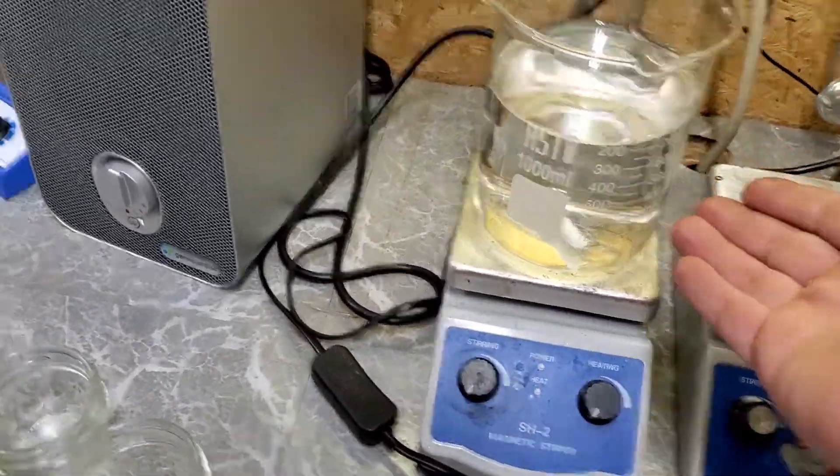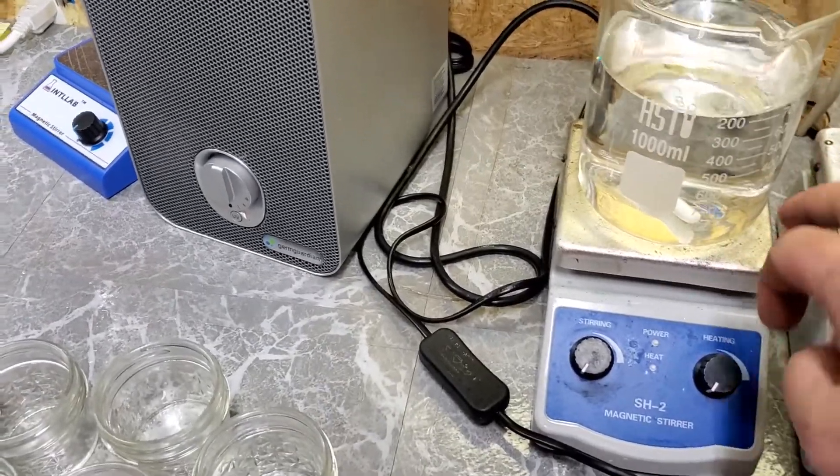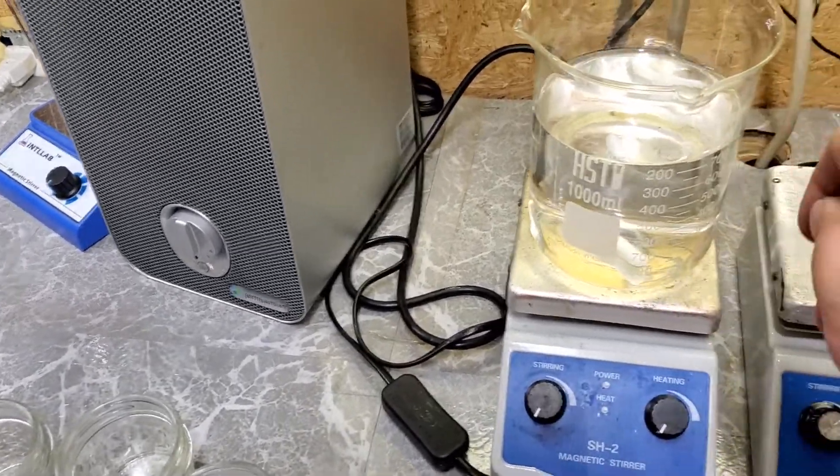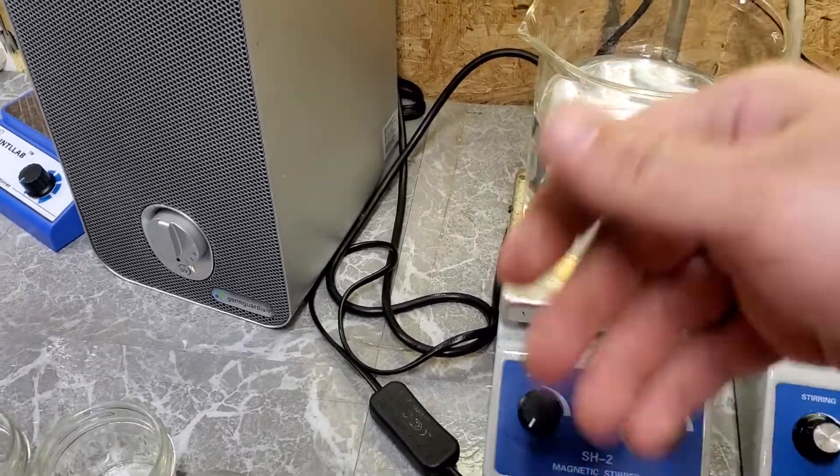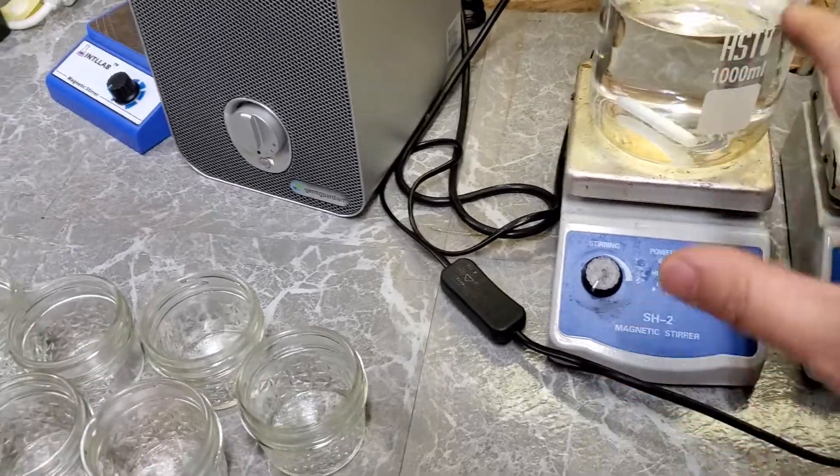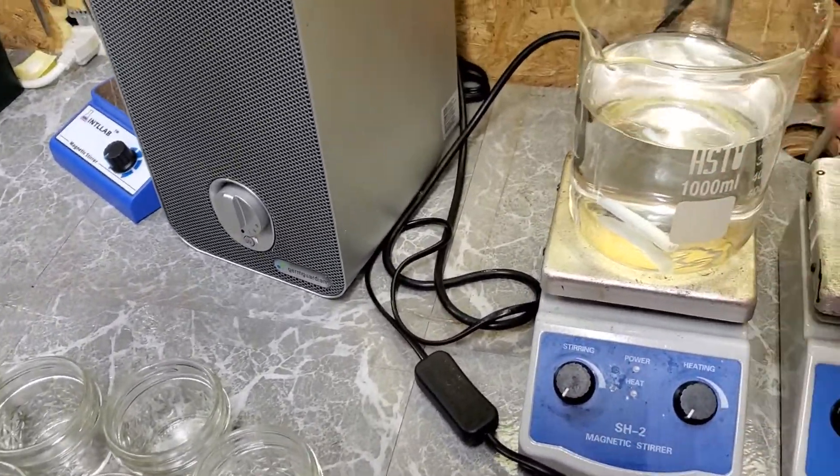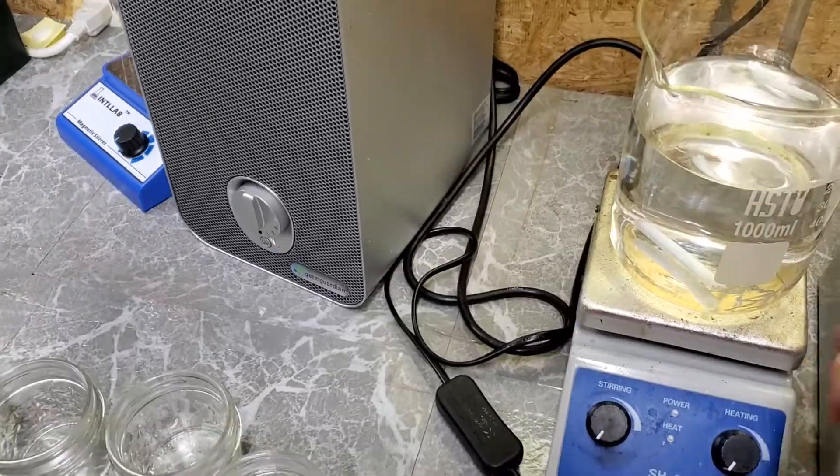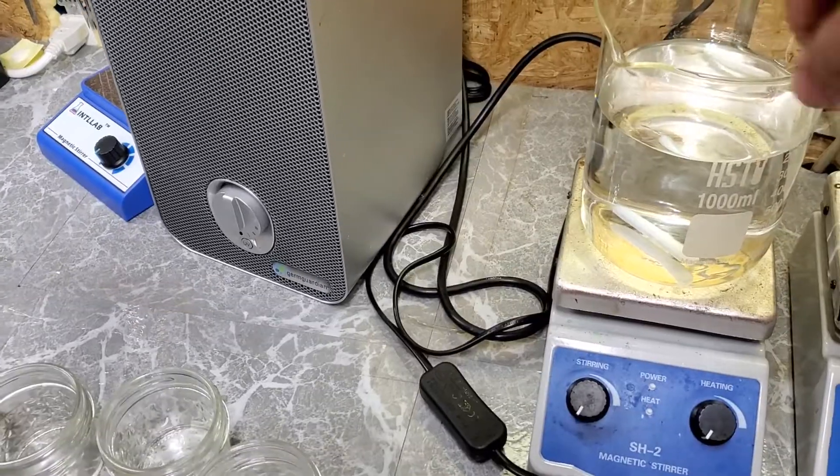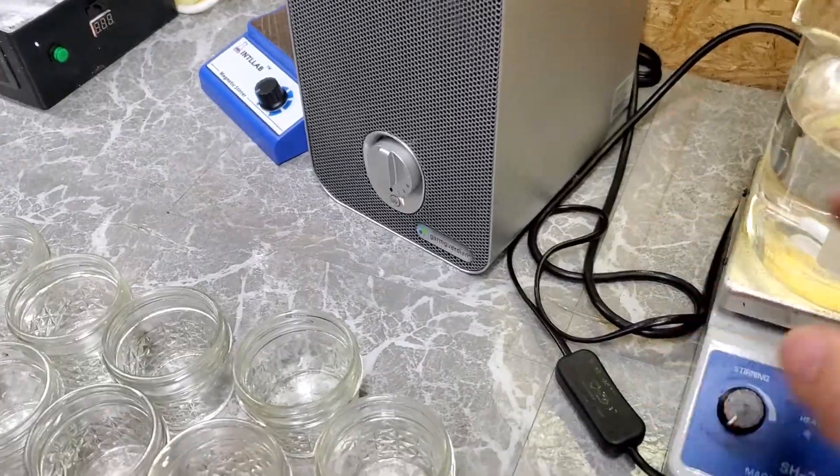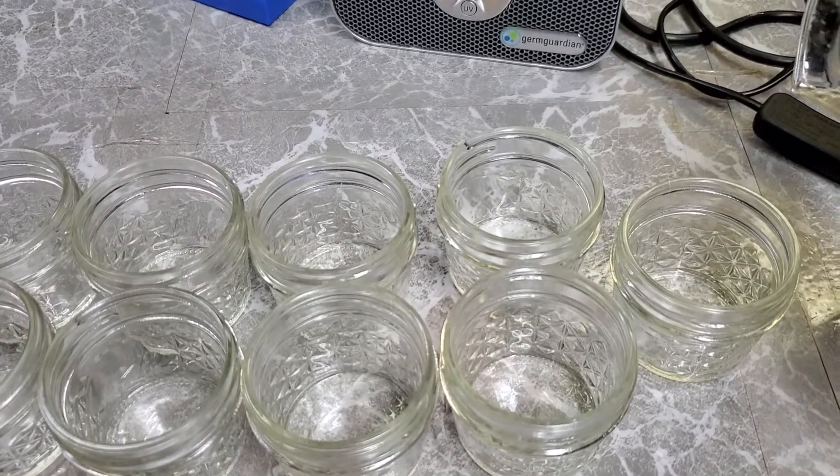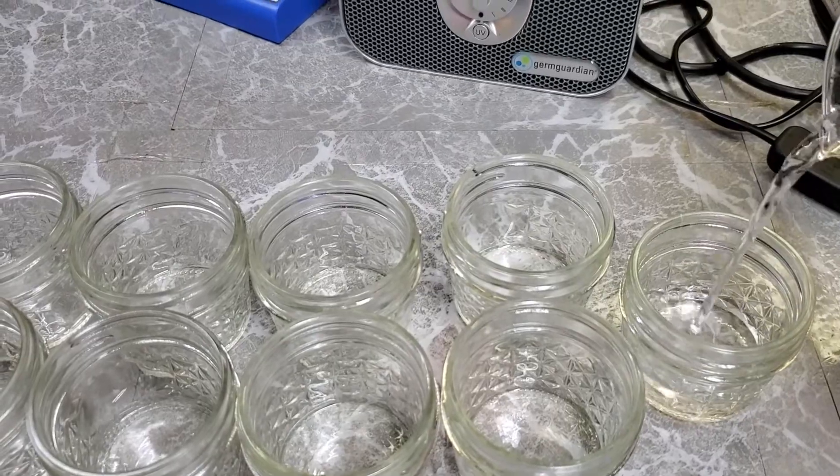Now real quick, you do not need a beaker and a magnetic stir and magnetic stir bars and all this. You can just use a spoon and a Pyrex cup or even a regular drinking cup. You do not need any of this lab equipment. This is just what I have out here, so I'm going to use it to make it a little bit easier on me. But yeah, you can just do this in a regular mixing cup or whatever and then use a spoon to stir all this together.